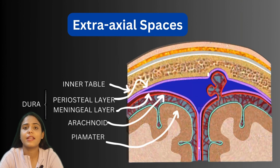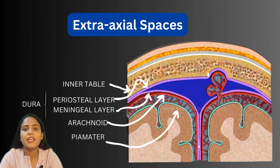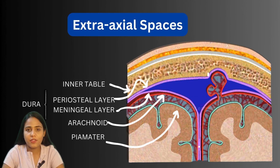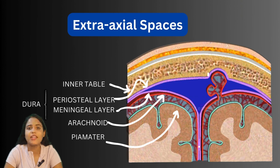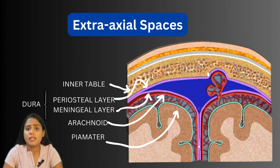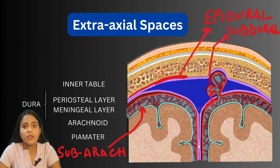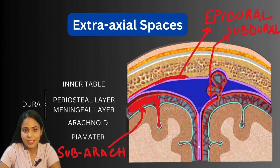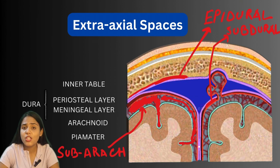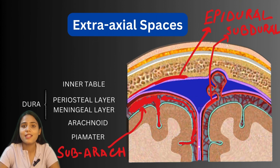Let's discuss the layers of the brain from outside to inside. Outermost we have the calvaria with the outer table and inner table. Then we have the three layers of meninges: the dura outside, then the arachnoid, then the pia mater. The dura itself has two layers: the outer periosteal layer and the inner meningeal layer. The epidural space is above the periosteal layer and below the inner table; the subdural space is below the meningeal layer of the dura and above the arachnoid; and below the arachnoid is the subarachnoid space.